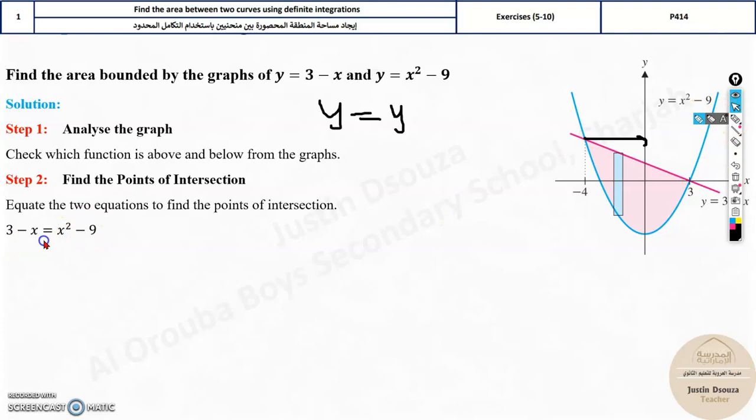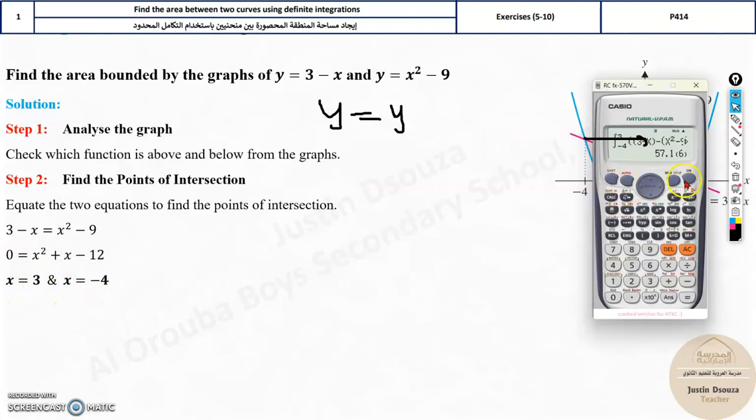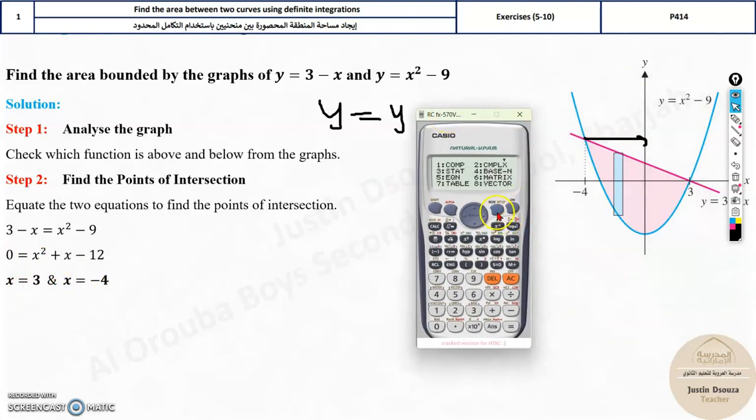3 minus x equals x squared minus 9. How would you solve it? Bring it to the other side, minus x to the other side, it will be plus x. So x squared plus x, and 3 to the other side will be minus 9 minus 3, which is negative 12. Now you can put it in the calculator and solve.